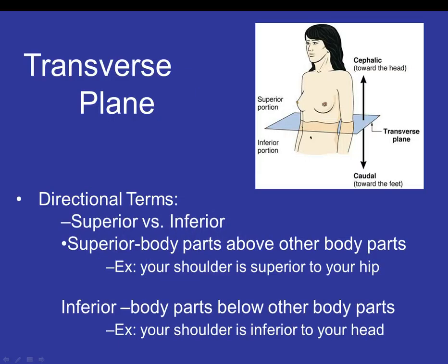The transverse plane divides you into top and bottom. The directional terms associated with it are superior and inferior. Superior refers to body parts above other body parts — for example, your shoulders are superior to your hips because your shoulders are above your hips. Inferior is the opposite: body parts below another body part. For example, your shoulder is inferior to your head because your head is above your shoulder.